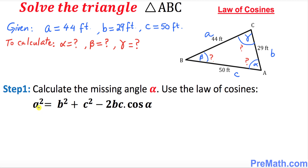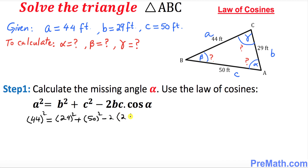Let's apply the values. a squared — with a equals 44 — gives us 44 squared, equals b squared plus c squared minus 2bc·cos(alpha). So that becomes: 44² = 29² + 50² − 2 × 29 × 50 × cos(alpha).